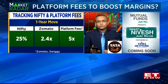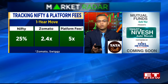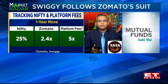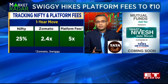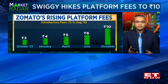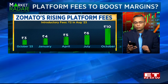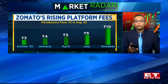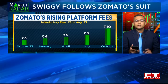This platform fee was first introduced by Zomato back in August 2023, when they started charging around 2 rupees on every order. This was hiked by another 1 rupee in October 2023, and at the start of this calendar year 2024, the platform fee was hiked to around 4 rupees. But in the first 10 months of 2024, that 4 rupees has now become 10 rupees on every order.